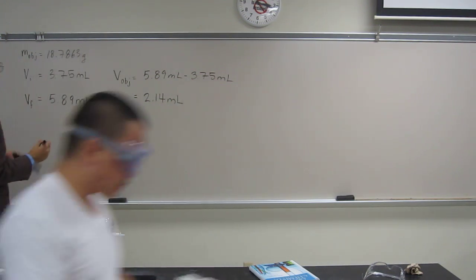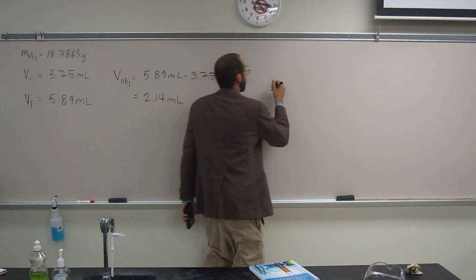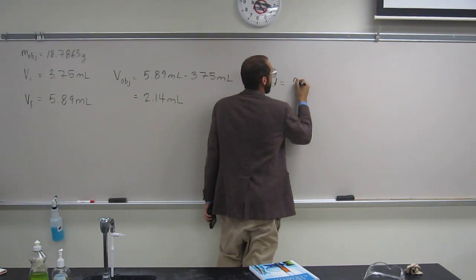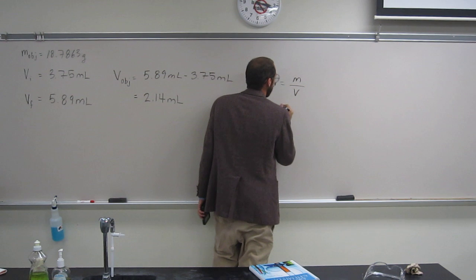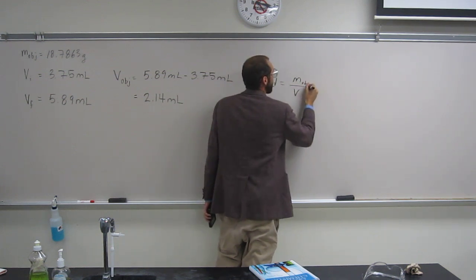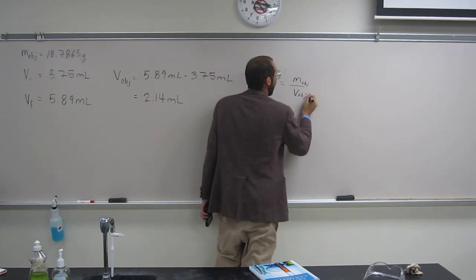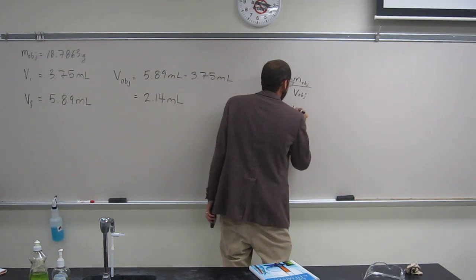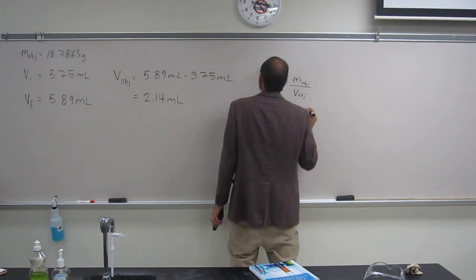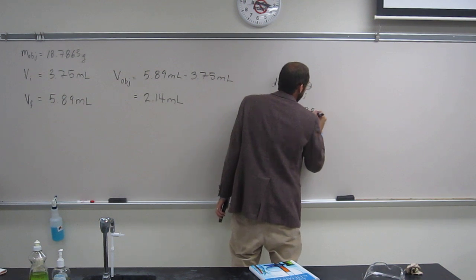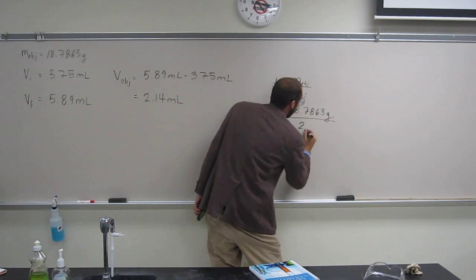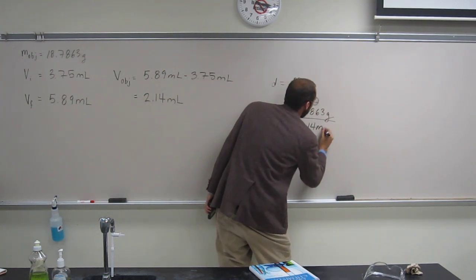Okay, so now let's find the answer to the first question: the density of the object. Remember density is mass over volume. So it's going to be the mass of the object over the volume of the object. So the mass of the object is given to us, 18.7863 grams. The volume of the object we figured out, 2.14 milliliters.